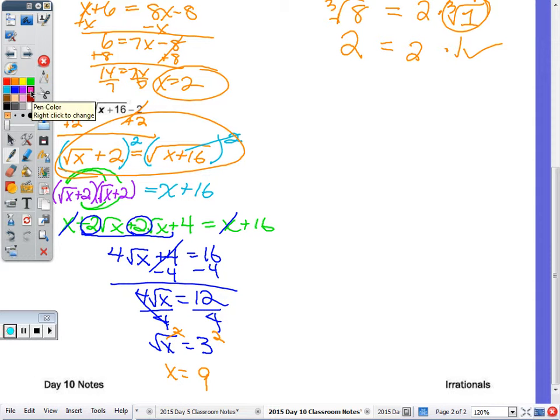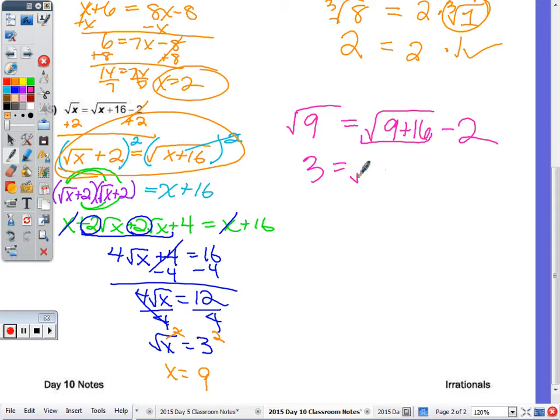Let's see if that works. You have to check it in the original equation, which is the square root of 9. Does that equal the square root of 9 plus 16 minus 2? Square root of 9 is 3. 9 and 16 is 25. Square root of 25 is 5. And 5 minus 2 is 3. It checks.